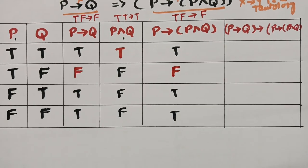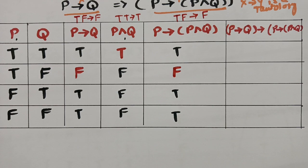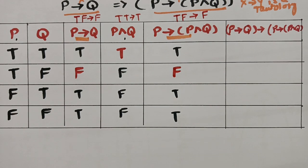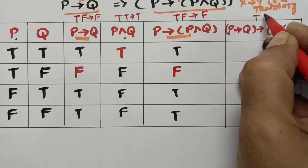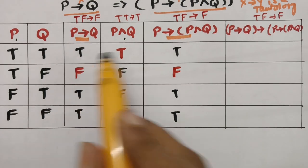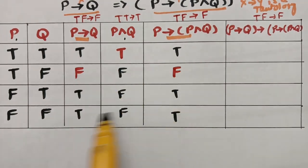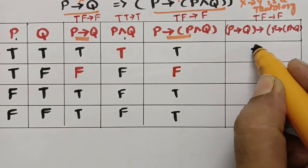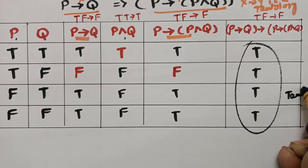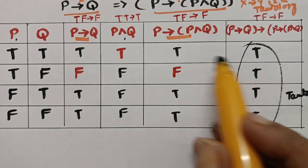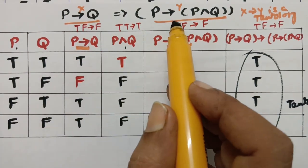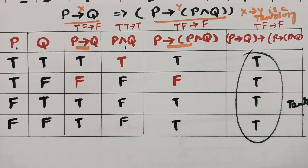Now compute the final implication between p→q (x) and p→(p∧q) (y). Checking for true-false: no true-false found. So write the opposite — all true: true, true, true, true. Since the last statement is all true, this is a tautology, therefore (p→q) double implies p→(p∧q).